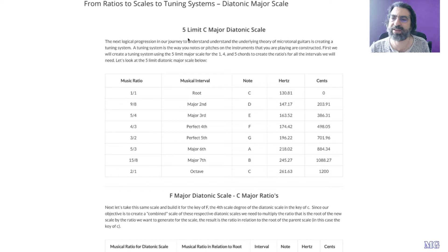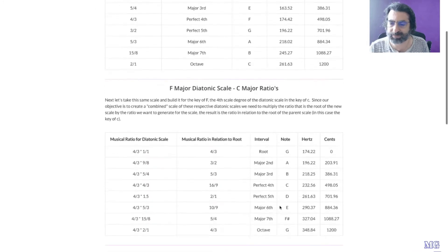Basically we're going to build a 5-limit just intonated diatonic scale over the 1, 4, 5 chords of your root and we're going to look at the 13 pitches that get generated by combining those three. Then the next step, which we'll talk about in another video, is how you would then create an instrument or a guitar neck from that.